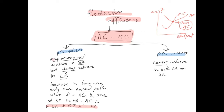Price takers may or may not achieve productive efficiency in the short run, but will always achieve it in the long run, because being a price taker constantly incentivizes you to lower your average cost of production. In the long run, the firm will earn no more than normal profit where P equals AC, and since at Q* P equals MR equals MC, it follows that in the long run average cost will be equal to marginal cost.